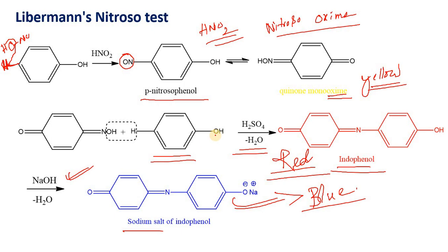This is about the identification of phenols. In the next video I will explain in detail about the identification of carbonyl compounds — that is aldehydes and ketones — carboxylic acids, and also amines. Thank you very much.